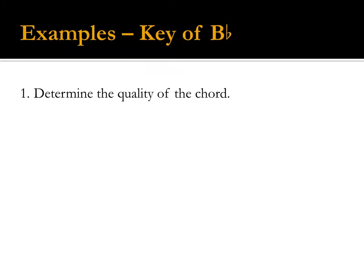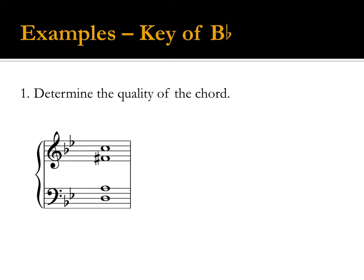Here are examples in the key of B-flat. The first step is to determine the quality of the chord. This chord is D, F-sharp, A, C, which is a major-minor seventh, so it is a V7.